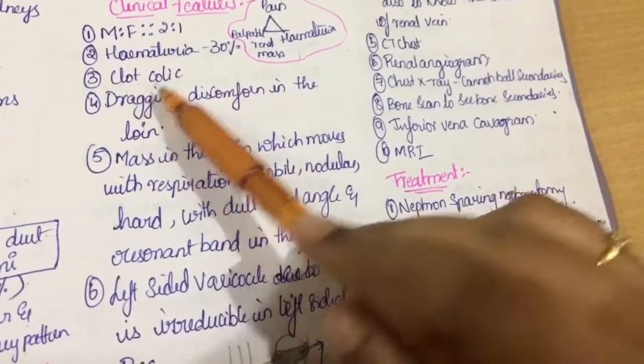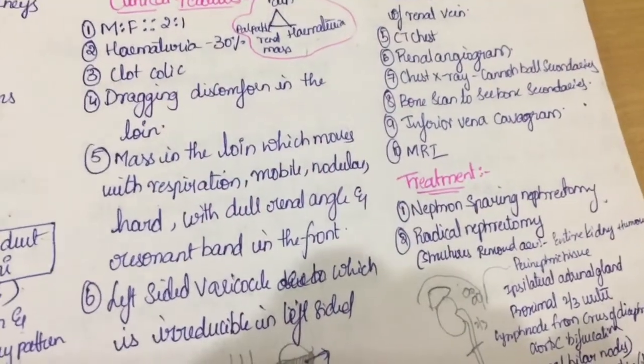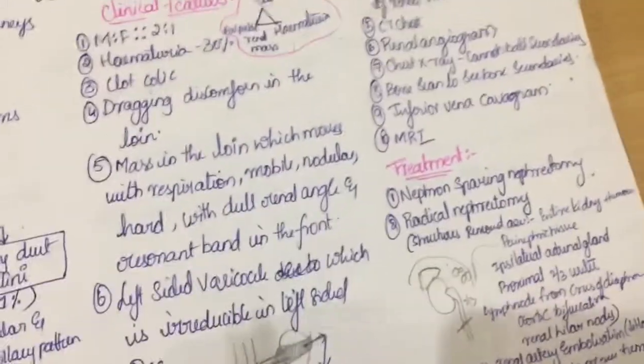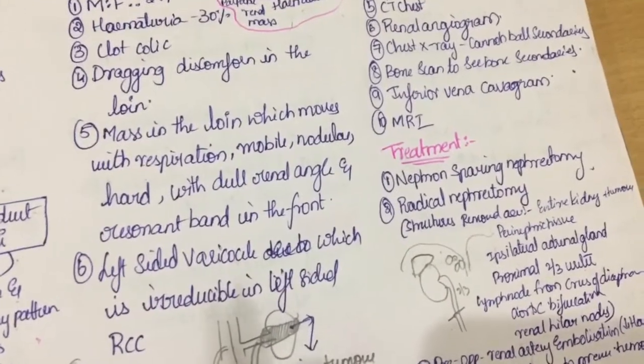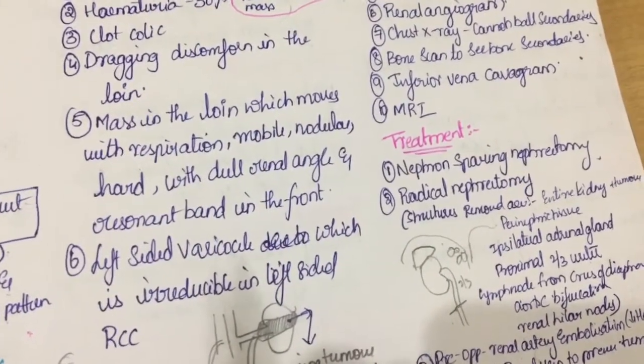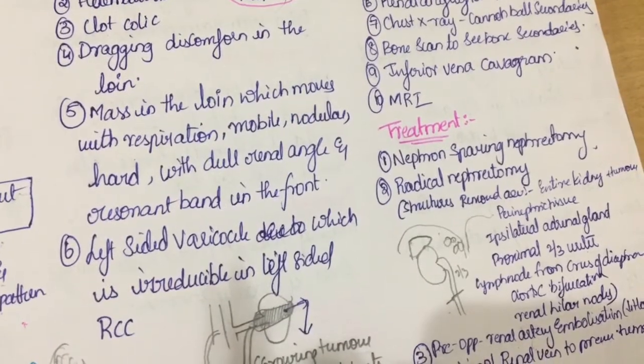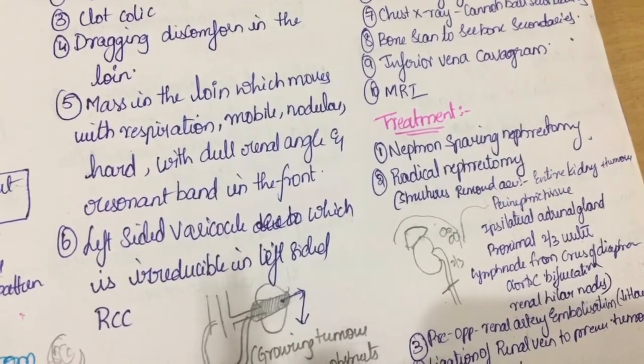Hematuria 30% and clot colic. Dragging discomfort in the loin region. Mass is in the loin which moves with respiration. Mobile, nodular, hard with dull renal angle and resonant band in front.